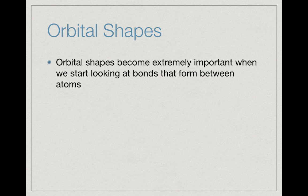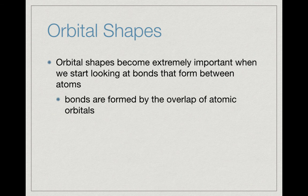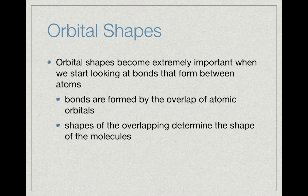Now let's take a look at orbital shapes, which are dictated by the wave function—these are the shapes that come out from the Schrödinger equation, the results of solving it for a single electron. Orbital shapes become really important once we start looking at bonds forming between atoms, because bonds are formed by the overlap of atomic orbitals. We need to know where these orbitals are because that's where we get our bonds, and those bonds determine the shape of our molecules.